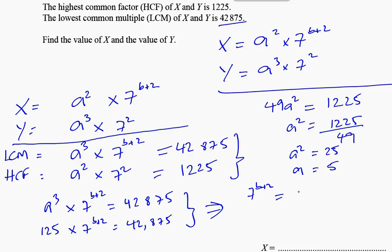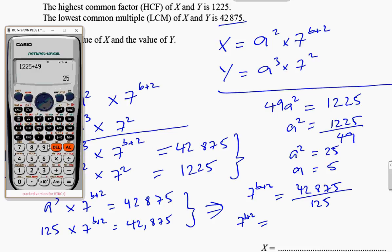So 7^(b+2) will give, if we divide 42,875 by 125, that gives us 343. So 7^(b+2) is equal to 343.